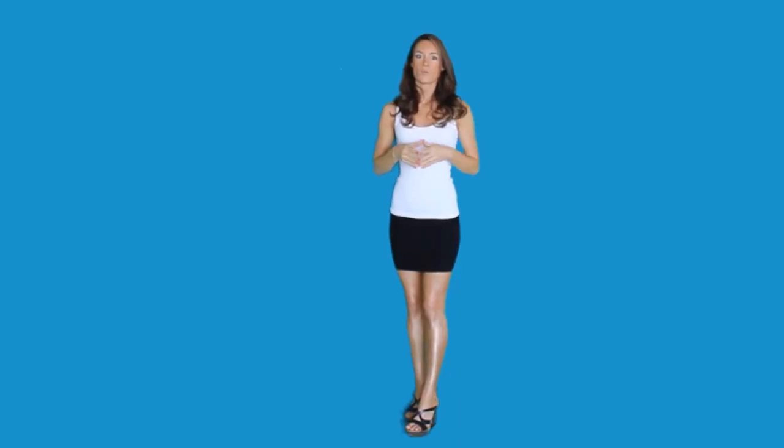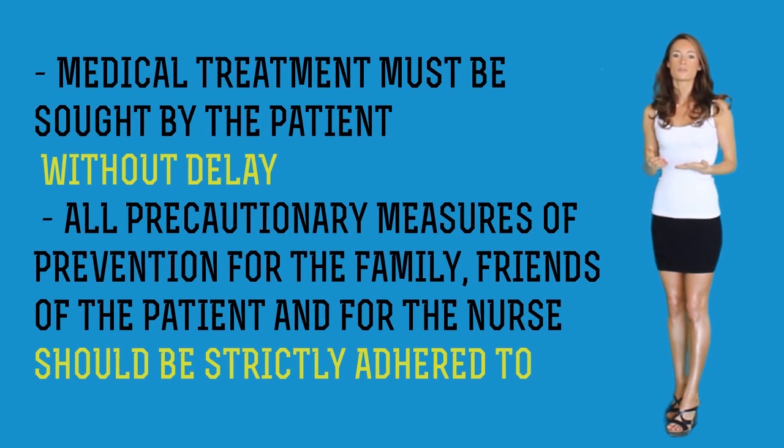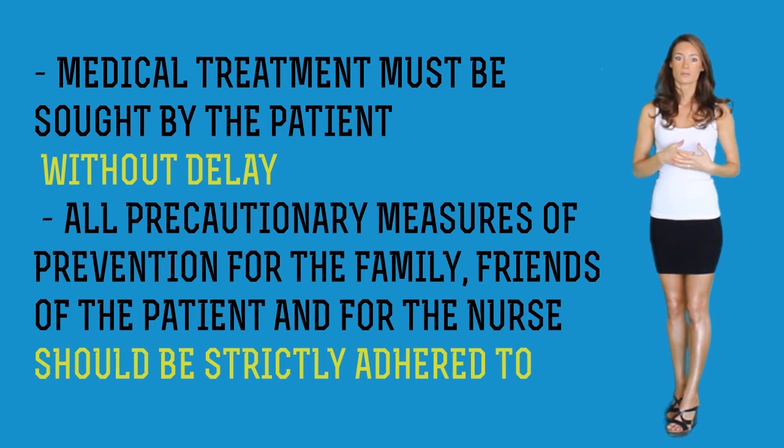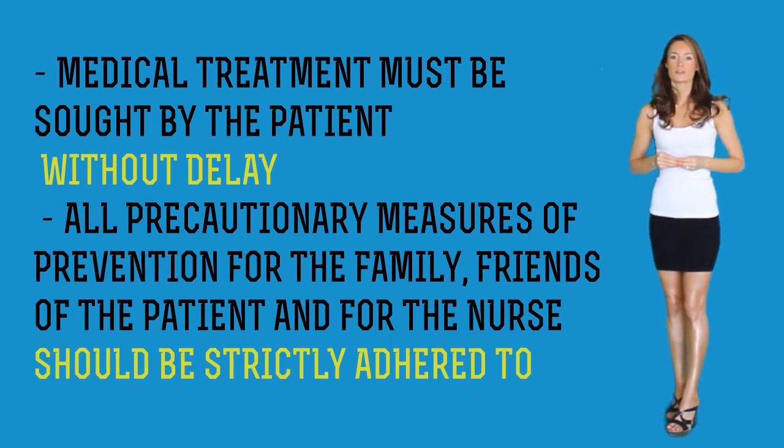In summary, once upon a time TB was a widespread disease. In the 1950s the disease was virtually wiped out with the help of newly formulated antibiotics, but today the disease has resurfaced. We now have multi-drug-resistant forms of TB and often it is very difficult to treat — a serious public health crisis in many large cities worldwide. The nurse should always adhere to protocols suggested for his or her safety when caring for a patient with TB. If you or your patient has TB in the active or latent state, medical therapy must be sought without delay, and all precautionary measures for the family, friends, and the nurse should be strictly adhered to.